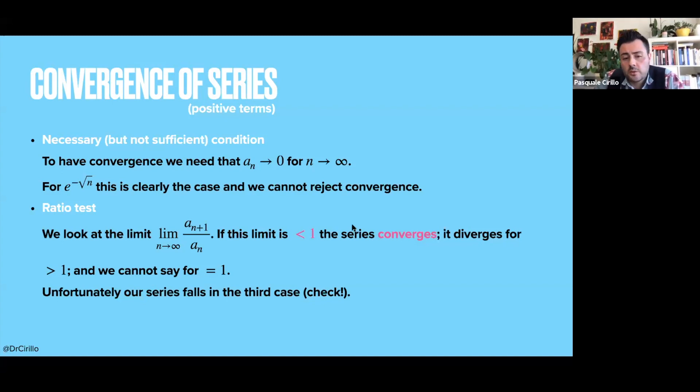So you look at the ratio of a_{n+1}, so that for us would be e to the power minus square root of n plus one, divided by a_n. And if this limit is smaller than one, you can say that the series converges. If it is larger than one, it diverges. If it is equal to one, you cannot say anything. So you cannot say if it converges or not. And I leave to you, unfortunately, to verify that for us the limit is exactly one. So we cannot use this test to actually say if there is convergence.